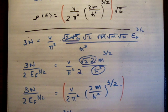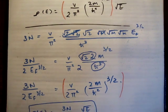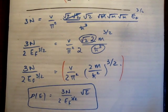So 3 over 2 times root E, and leave it at that. And this is the density of states in energy space.